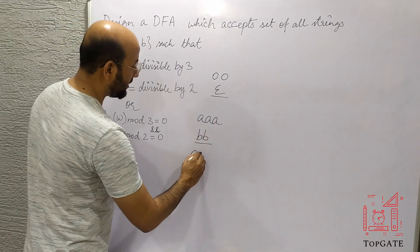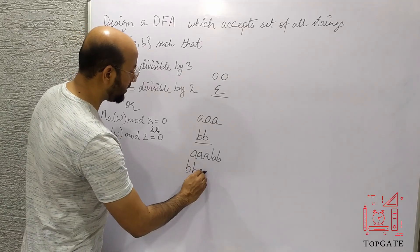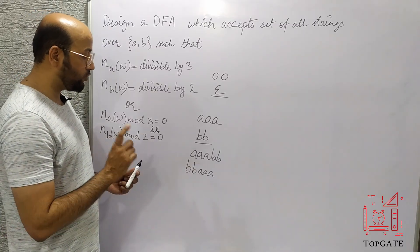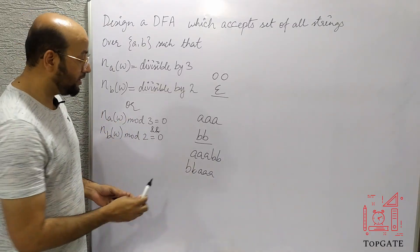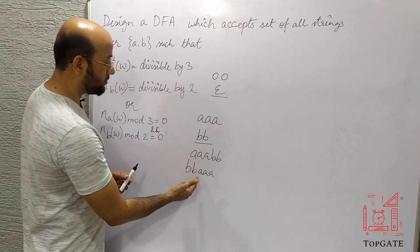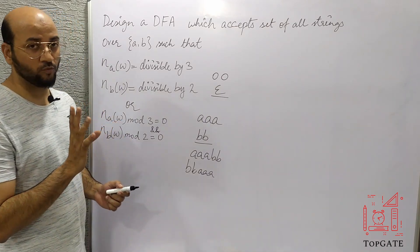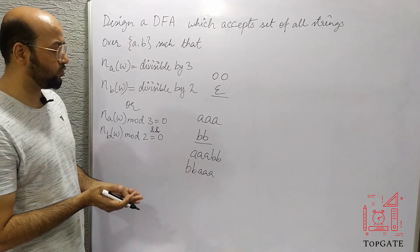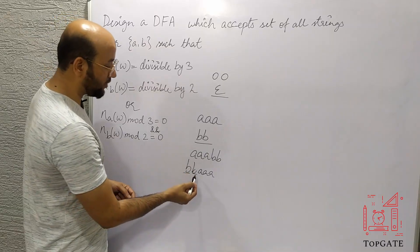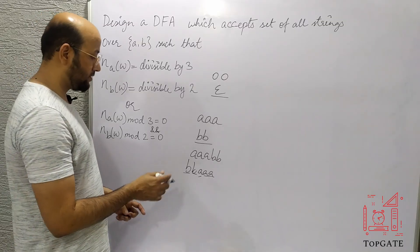So BB should also be accepted. Apart from this, AAABB and BBAAA should be accepted. If one B comes, it is mandatory to have at least one more B. As soon as we get one A, it is mandatory to get at least two more A's. If there are no A's and no B's there is no issue.